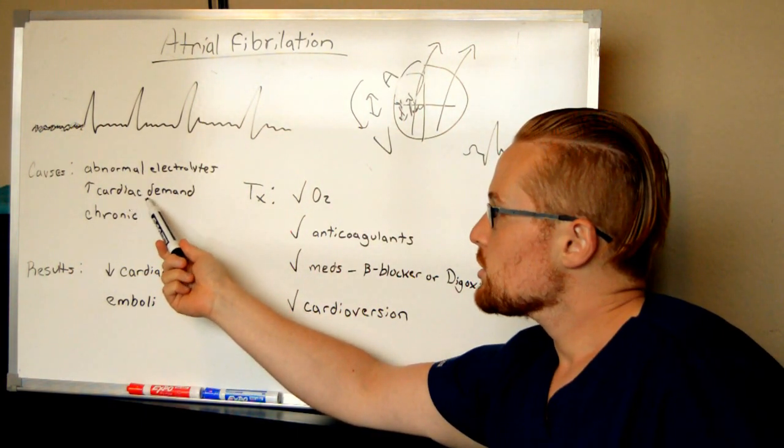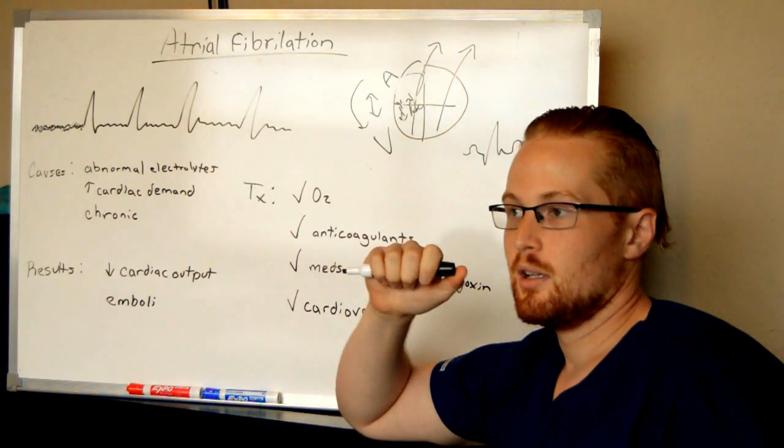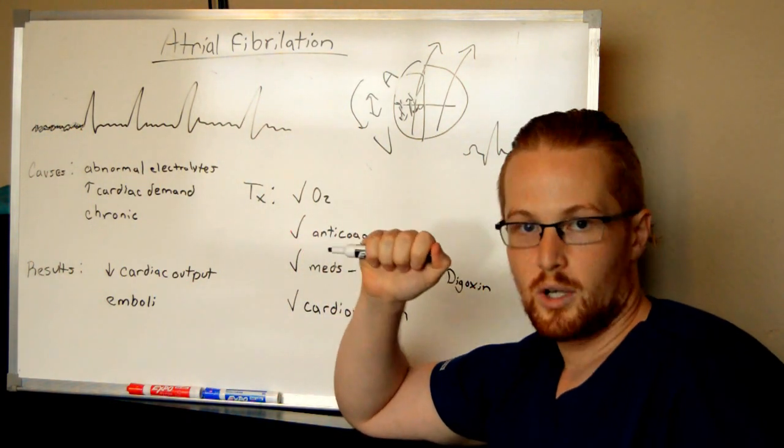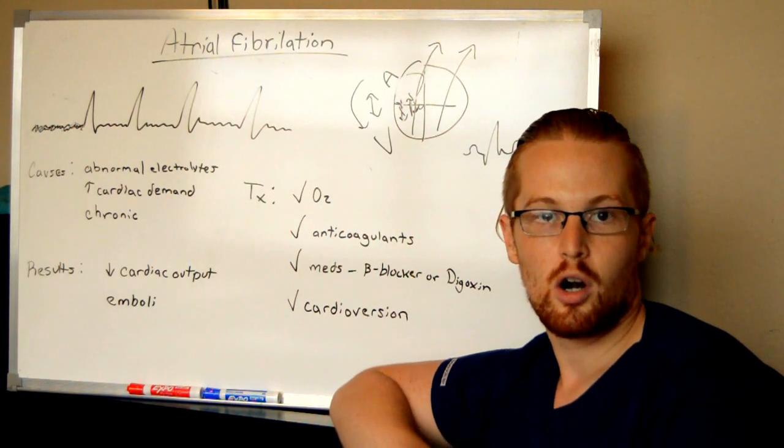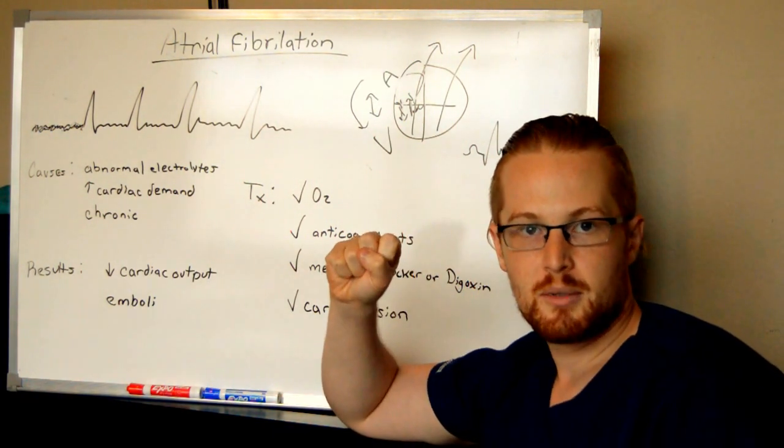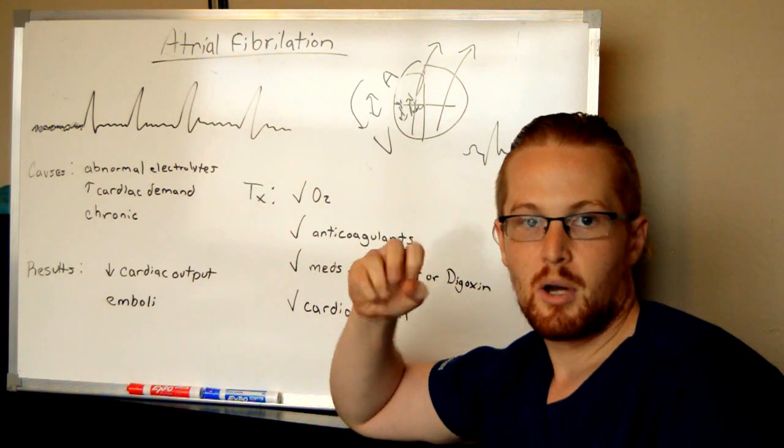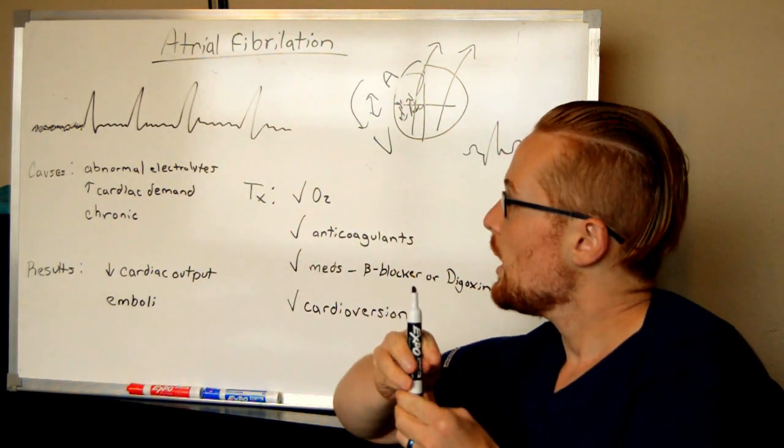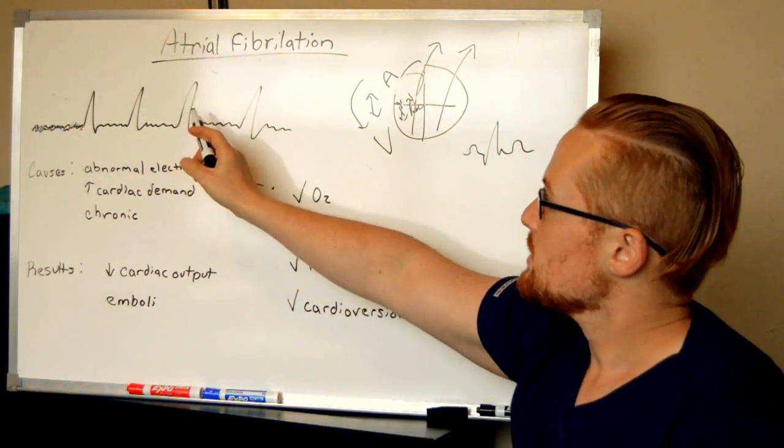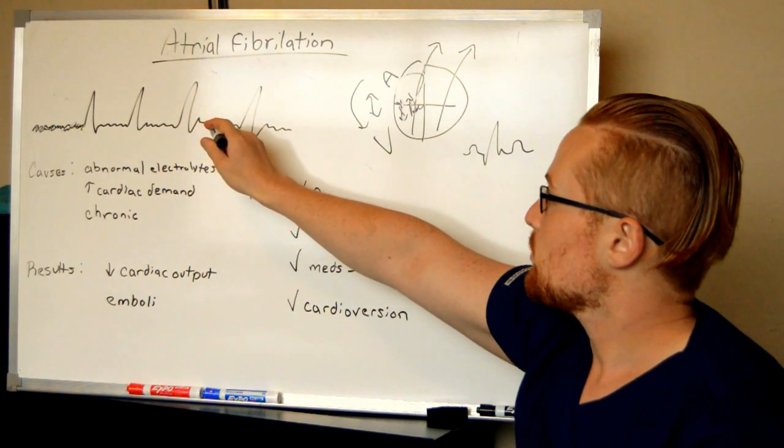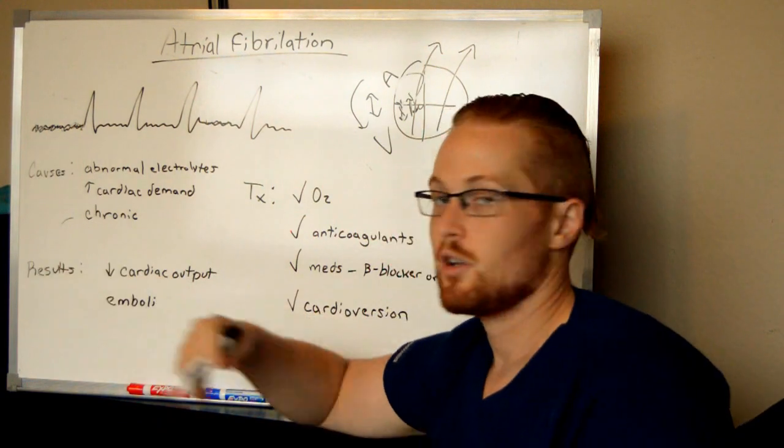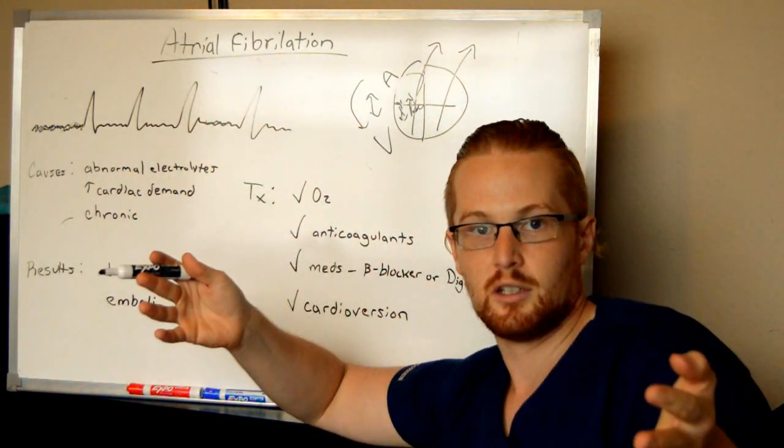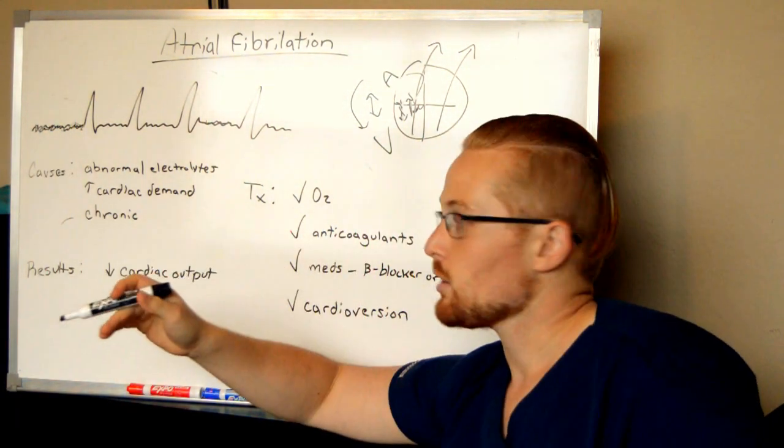Other causes include increased cardiac demand. So if a patient is having respiratory issues or they have hypovolemia or they're in some sort of shock, the heart is trying to speed up to compensate and assist the body to meet its oxygen demands. The heart may not be able to compensate and may be thrown into atrial fibrillation. And some patients just have this chronically and live with it for their entire lives.